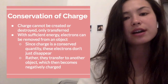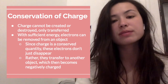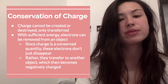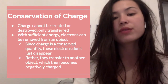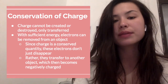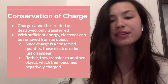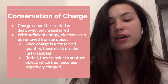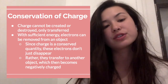We also have the idea of conservation of charge. Charge, just like energy or momentum, is a conserved quantity, which means charge cannot be created or destroyed — it can only be transferred between objects. With enough energy, electrons can be removed from an object, and since charge is conserved, those electrons don't vanish; they transfer to another object, which then becomes negatively charged.